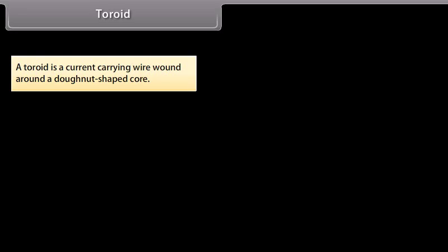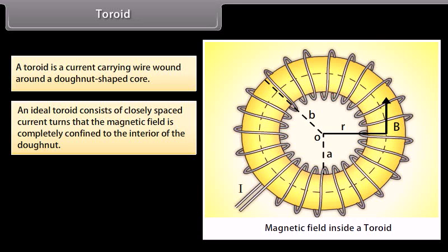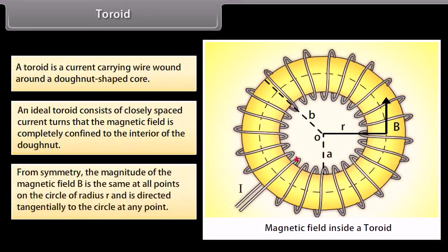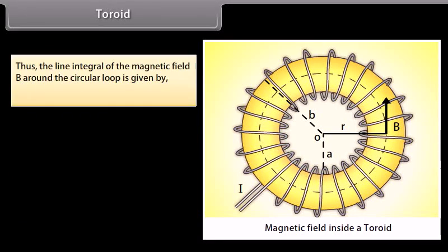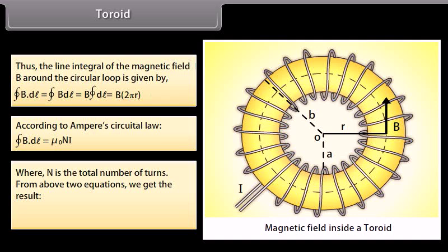A toroid is a current carrying wire wound around a donut-shaped core. An ideal toroid consists of closely spaced current turns such that the magnetic field is completely confined to the interior. By symmetry, the magnitude of B is the same at all points on a circle of radius R and is directed tangentially. The line integral of B around the loop equals B times 2πR. By Ampere's law, with N total turns, B = μ₀NI / (2πR).